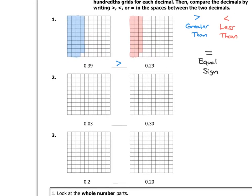For number 2, I have the decimal 0.03, or 3 hundredths — I shade just 3 squares: 1, 2, and 3. The decimal 0.30 is 30 out of 100, or 3 tenths. So I shade 30 squares: 10 for the first column, 20 for the next, and 30 for the third. Obviously the grid on the right has more squares shaded, so 0.30 is more than 0.03. We'll use a less than symbol: 0.03 is less than 0.30.